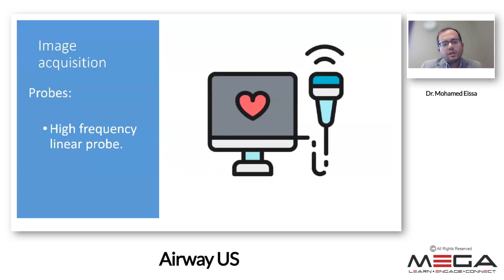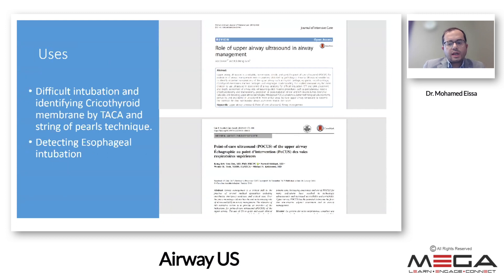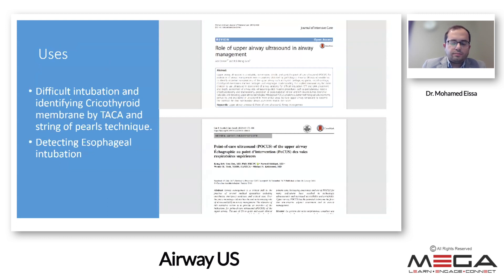For image acquisition, since we are scanning superficial structures, we use a high-frequency linear probe with less penetration power, which gives us the advantage of high linear and axial resolution. The existing literature has shown many uses of airway ultrasound in managing difficult intubation — by better identification and visualization of the cricothyroid membrane, and by helping detect inadvertent esophageal intubation. Airway management is the anesthetist's most recognized skill, and complications can lead to higher morbidity and mortality.